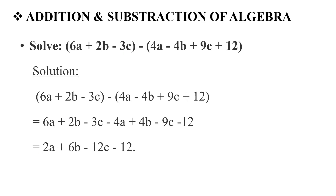Next, we go to addition and subtraction of algebra. First question: solve 6a + 2b - 3c - (4a - 4b + 9c + 1). First, we open the two brackets. We have a negative sign before the second bracket. Opening the second bracket gives us 6a + 2b - 3c, and we apply the sign change. Collecting like terms by addition and subtraction, the answer is 2a + 6b - 12c - 12.